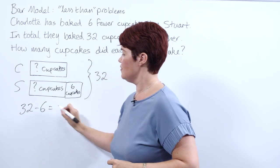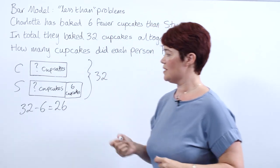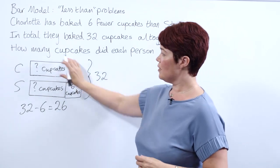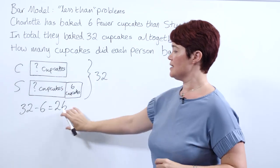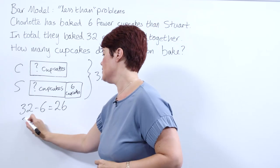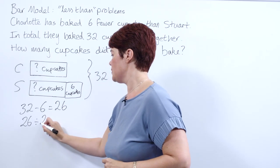So 32 take away 6 is 26. Now our two bars that are equal make 26, so we can half that. 26 divided by 2 is 13. This is our unknown.